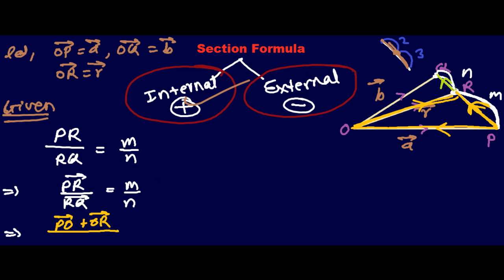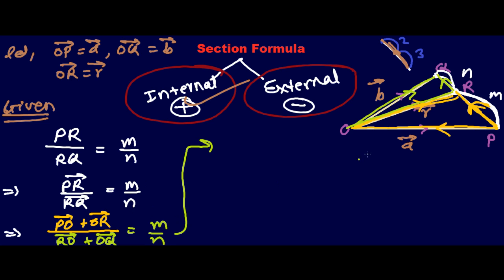Now let's find vector RQ. Applying the triangle law again, RQ equals RO plus OQ. So our equation becomes: PO plus OR, divided by RO plus OQ, equals m over n. Now substituting: OP equals a, so PO equals negative a; OR equals r; RO equals negative r; and OQ equals b.